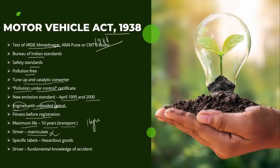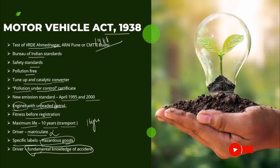Drivers must be matriculated, though this rule has since been abolished. If carrying hazardous or pollution-causing materials, a specific label must be used on the vehicle. Drivers must have fundamental knowledge of what they are carrying in case of an accident. If highly flammable material is involved, drivers must know what to do if an accident happens. These are the main points under the Motor Vehicle Act 1938, amended 1988.